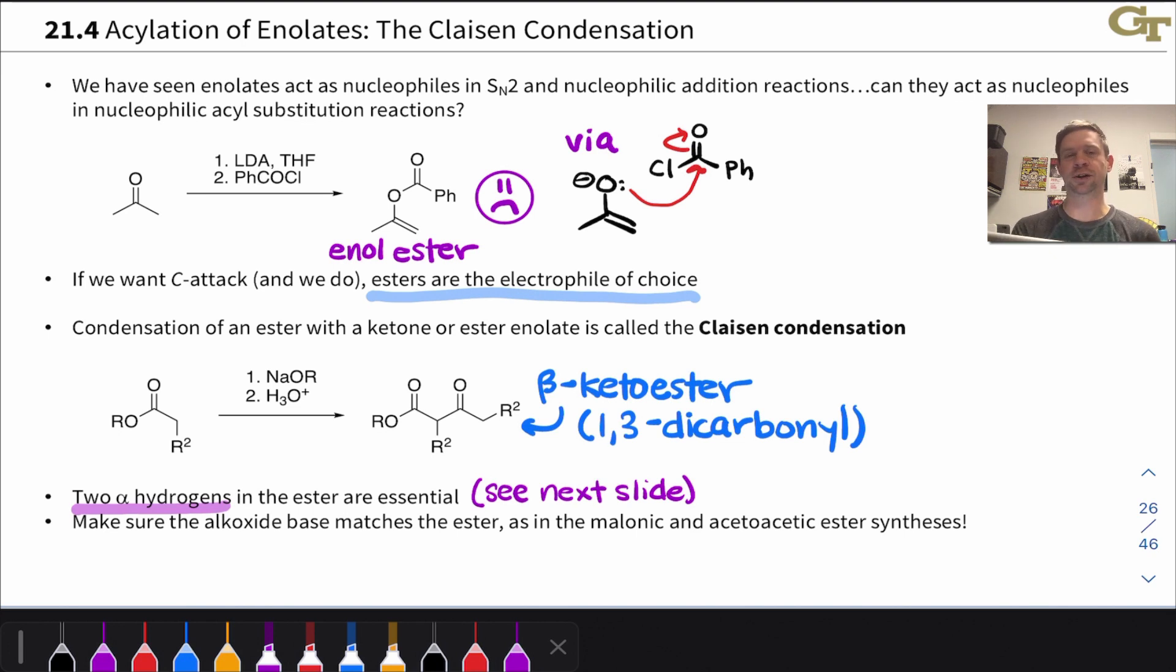The other thing we need to make sure of is something that harkens back to the acetoacetic and malonic ester syntheses. The alkoxide base that we use in this reaction, NaOR, needs to match the R groups of the ester. If we don't do that, then transesterification is going to occur.